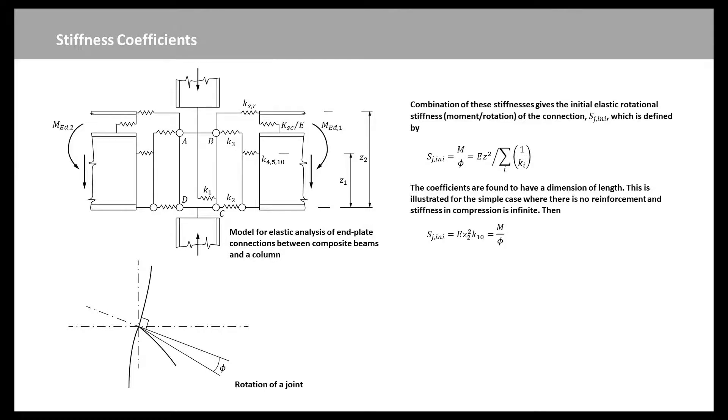The coefficients are found to have a dimension of length. This is illustrated for the simple case where there is no reinforcement and stiffness in compression is infinite. Then this equation is expressed here. This equation then gives the result with a dimension of length: K10 equal to 2AB over LB. The bolts of total net area 2AB and effective length LB resist the tension M over Z2. Their elongation is this E and phi equation.